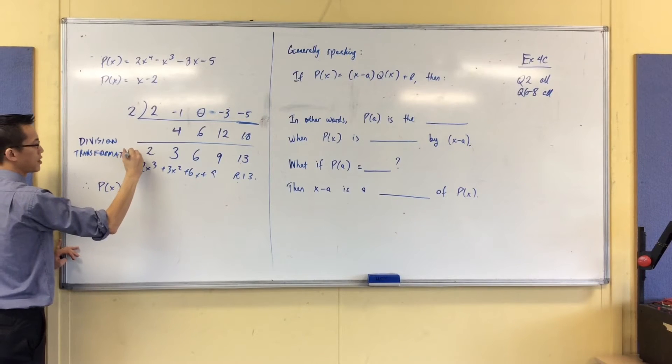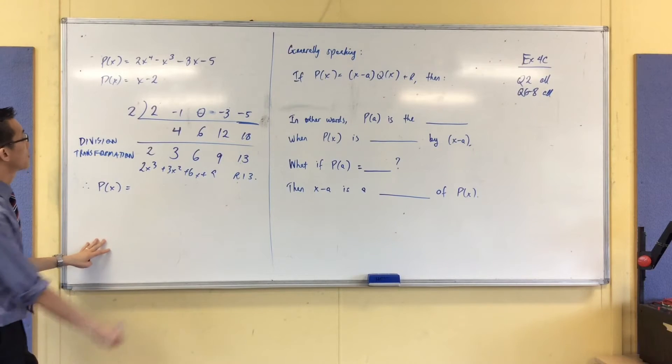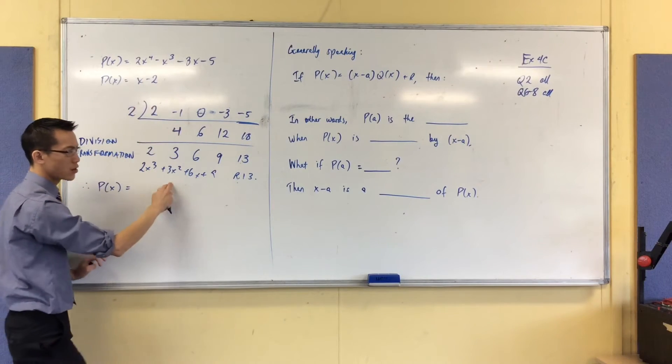And I've written it down a couple of times, I just haven't stated its name. So it's saying the original polynomial is divisor times quotient plus remainder.